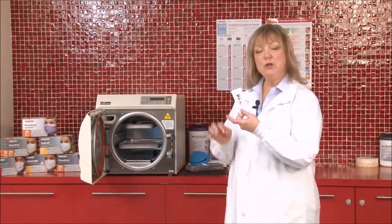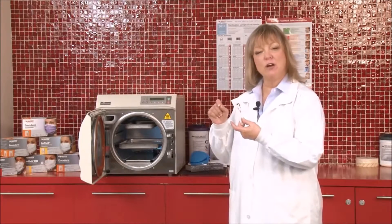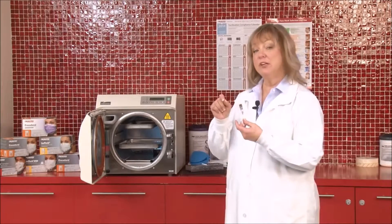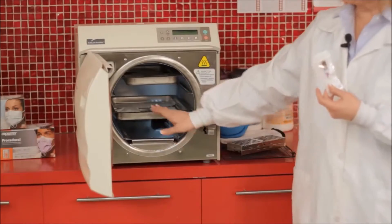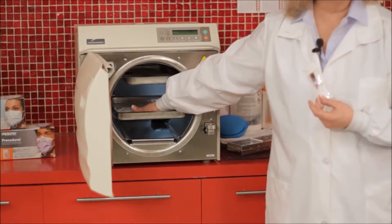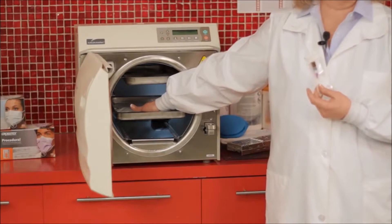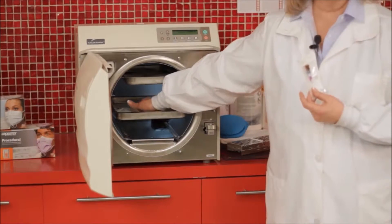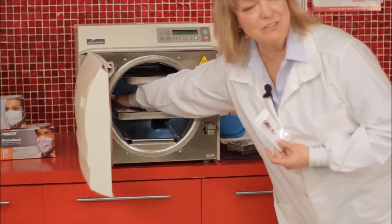When you place the vial, you want to place it in the most challenging part of the sterilizer. That means the place that you're most likely to have an air pocket. That area is going to be on the bottom tray of the sterilizer. It's either going to be over the drain, which may be in the middle of some autoclaves. In other autoclaves, it's in the very back left-hand corner.